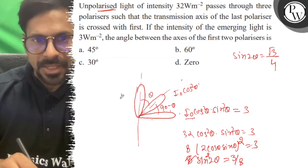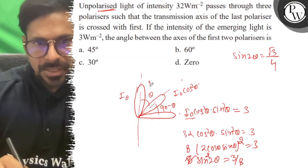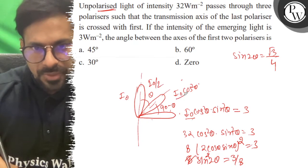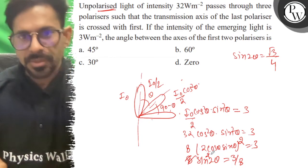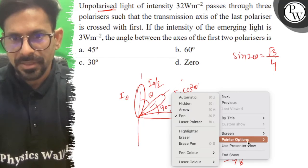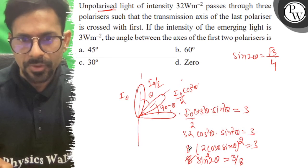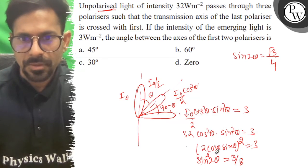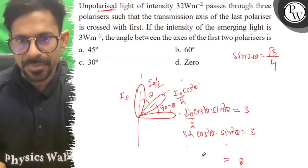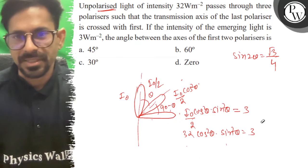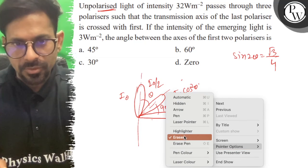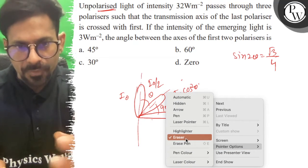So this is I_0 by 2. We have not seen this unpolarized. For unpolarized light, then intensity will be I_0. When it passes, it will be I_0 by 2.